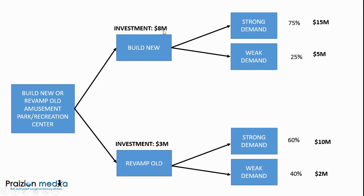Now we need to go further than this. We also need to look at the profit. We've got the investment and we've got the revenue; we need to find the profit for the strong demand branch. So we're going to subtract the $8 million from the $15 million and multiply by 75%, or 0.75. Then we're going to do the same for the weak demand — find what the profit would be: 5 minus 8, which is minus 3, times 25%. Then we add those two numbers together. And we'll do the same for the revamp option.